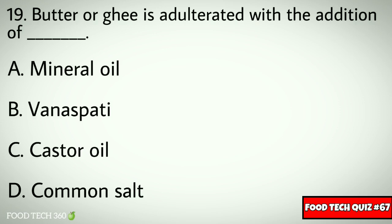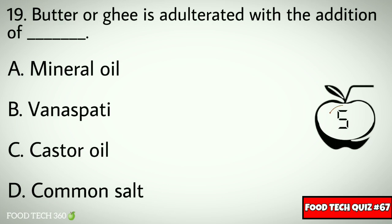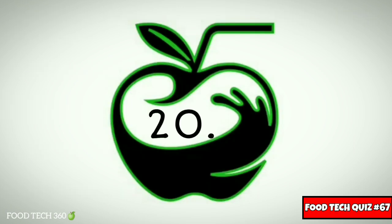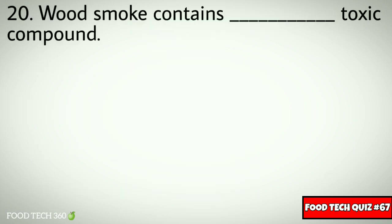Question number nineteen: butter or ghee is adulterated with the addition of? Options: A) mineral oil, B) vanaspati, C) castor oil, D) common salt. Correct answer: B) vanaspati.